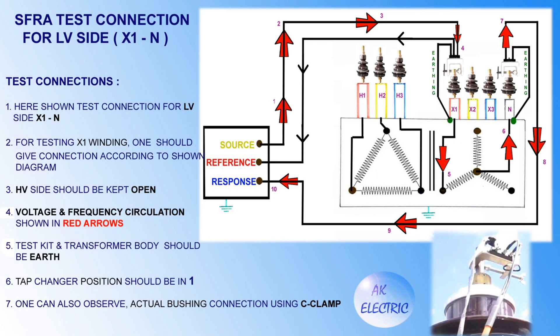For the SFRA test connection on the LV side — X1 to neutral: connections are made as shown in the diagram for testing the X1 winding. The HV side should be kept open. Voltage and frequency circulation is shown in red arrows. The test kit and transformer body should be earthed, tap changer position at one, and bushing connections are made using C clamps as shown.